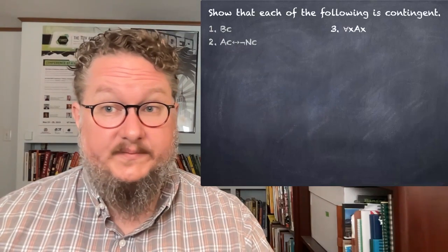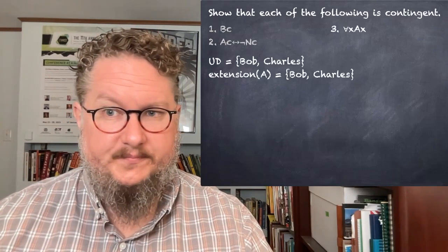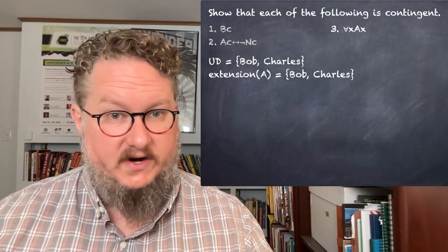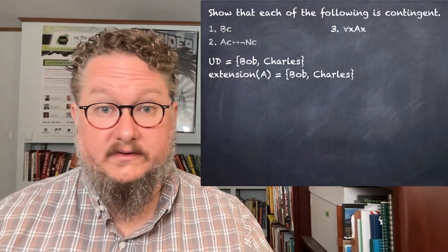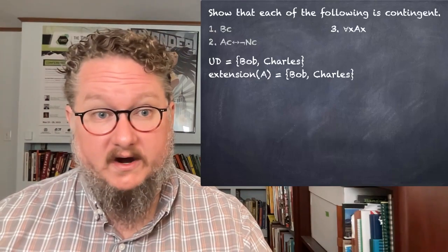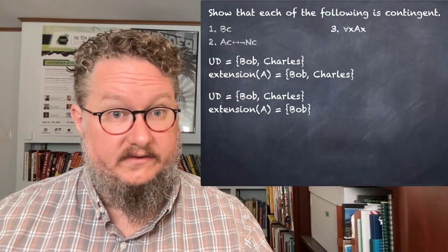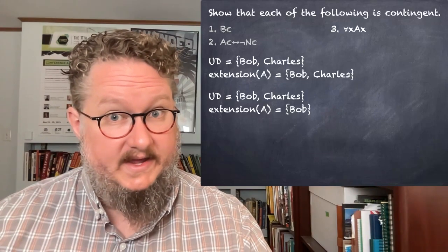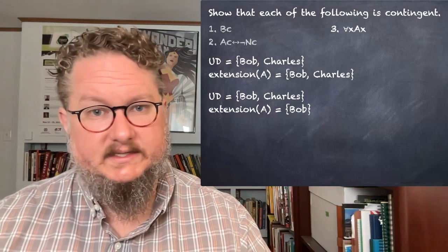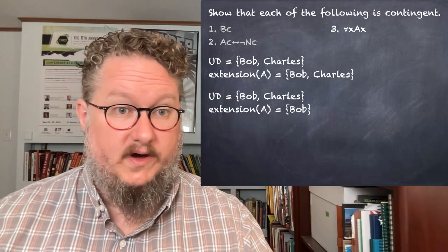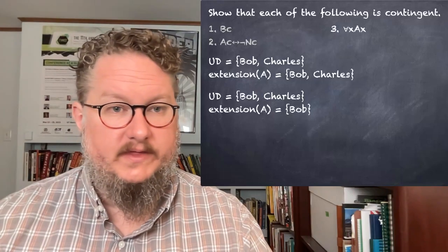For ∀x Ax: our universe of discourse stays the same. If the extension of A is Bob and Charles — everything in the universe — then ∀x Ax is true. On the other hand, if the extension of A is smaller than the universe of discourse, we go to Bob and it's true, but we go to Charles and AX is false, so the universal quantifier statement is false. Again, contingent.